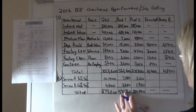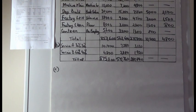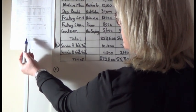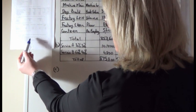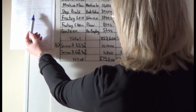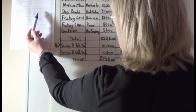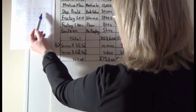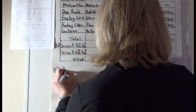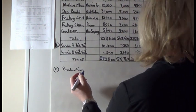Part C asks us to calculate a suitable overhead absorption rate for each department. You decide what's most suitable by looking back at machine hours and labour hours in the table. For Production 1, machine hours are higher than labour hours. For Production 2, labour hours are much higher than machine hours. So we use two different rates.